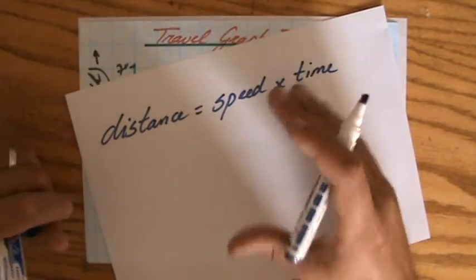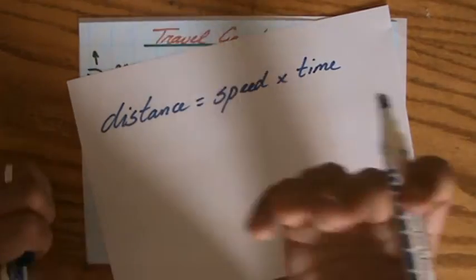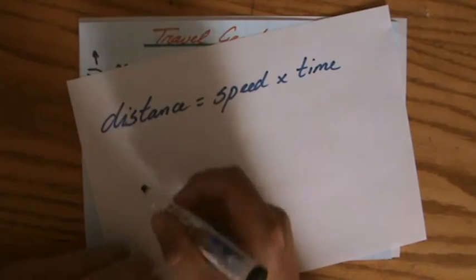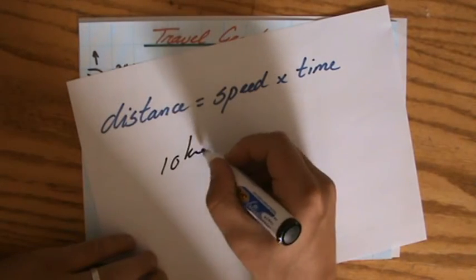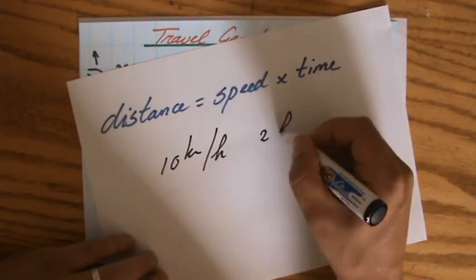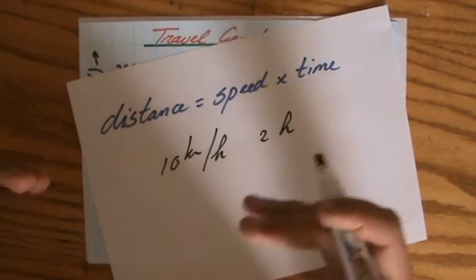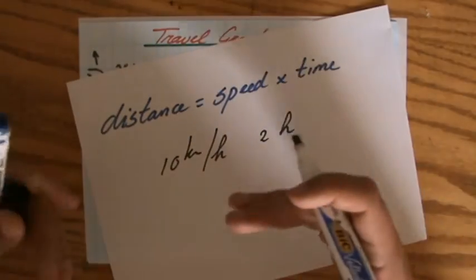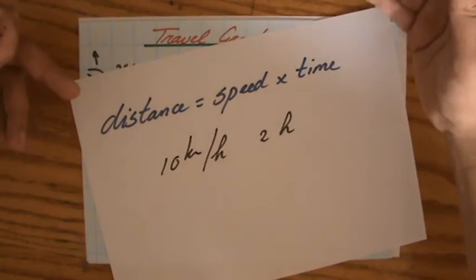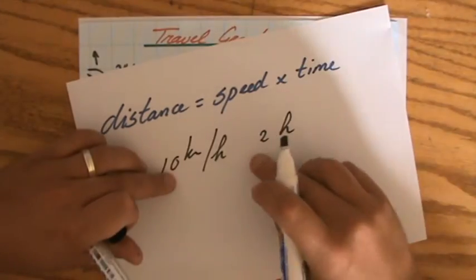The distance, I'm sure you realize it, is speed times time. If you forgot, I always make an easy example for myself. Let's say I go 10 kilometers per hour for two hours. What would be my distance? Then I multiply, 20 kilometers. If 10 kilometers in one hour, then 20 kilometers in two hours. My distance, speed times time.